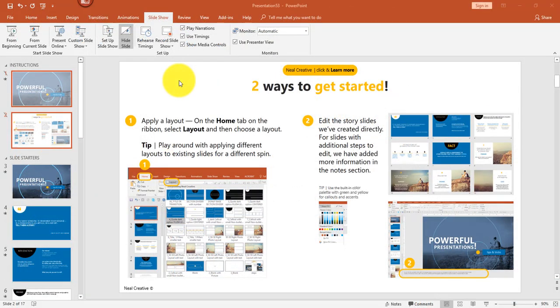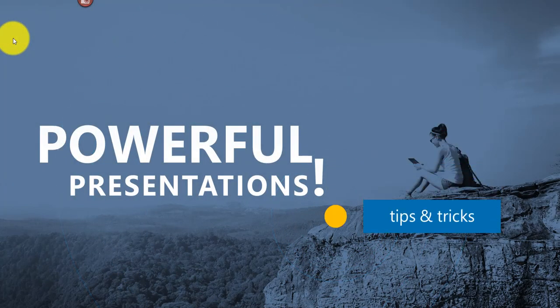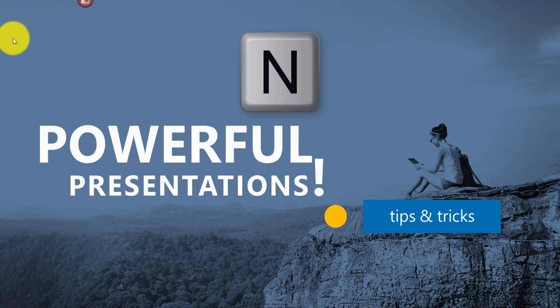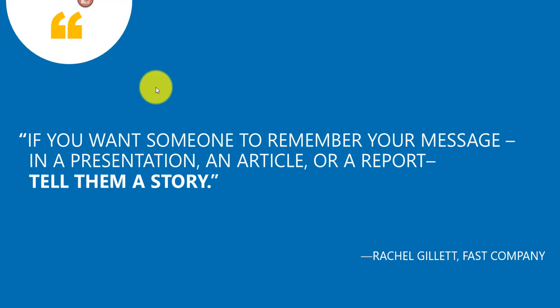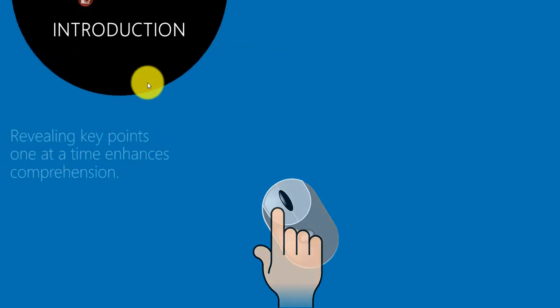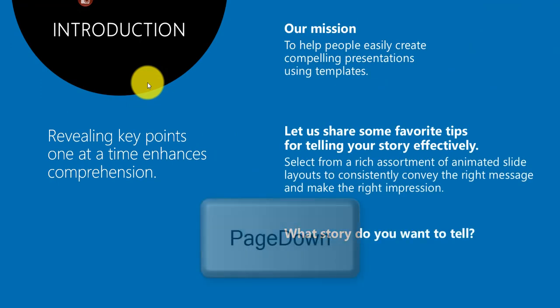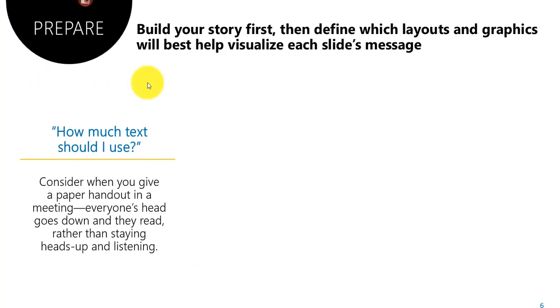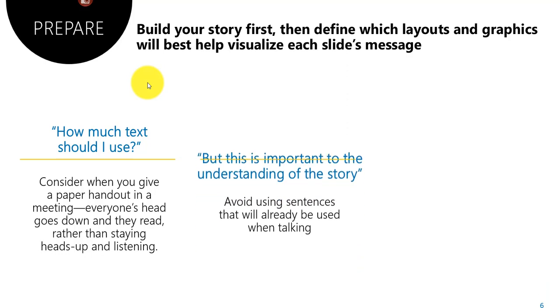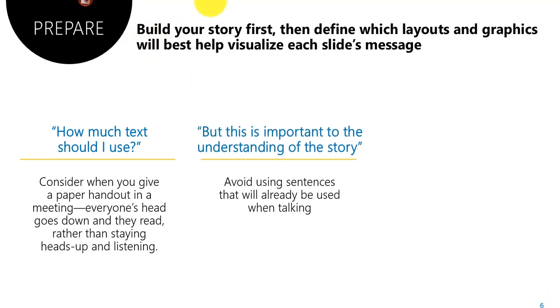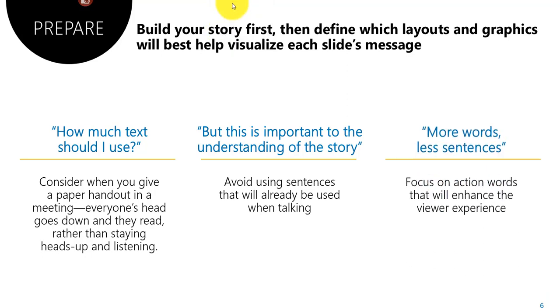Let's go ahead and start the slideshow by clicking From Beginning. I'll show you five ways to advance slides: press N (as in Nancy) on your keyboard, click the left mouse button, press Page Down, press the Down arrow, or right-click and select Next.